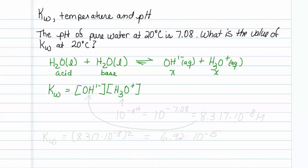And I've got a way to get the concentration of hydronium. You may remember that the concentration of hydronium is equal to 10 to the minus pH, and I'm given that value, so that's equal to 10 to the minus 7.08, which turns out to be 8.317 times 10 to the minus eighth molar.